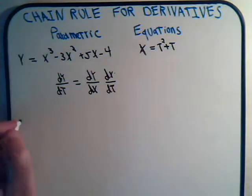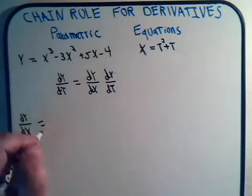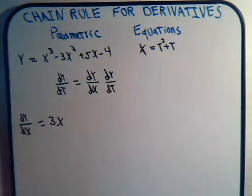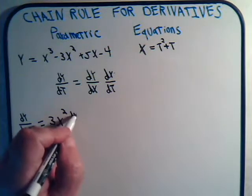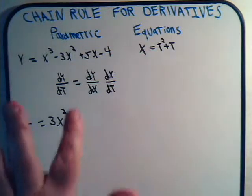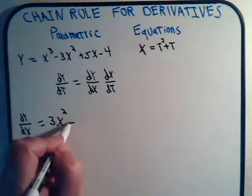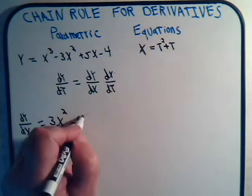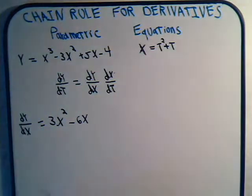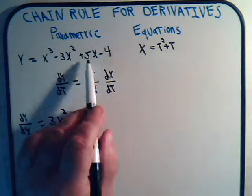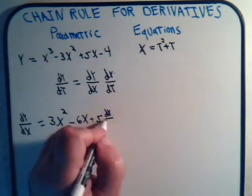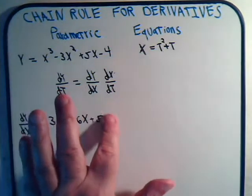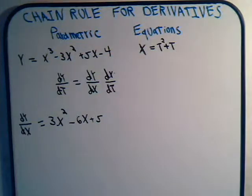So dy/dx will equal 3 times x squared — bring the 3 down, reduce the exponent — minus 6x — bring the 2 down from the x squared term — plus 5. The derivative of the constant term is 0. So dy/dx equals 3x squared minus 6x plus 5.